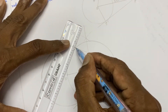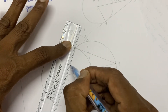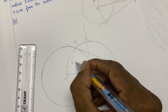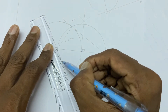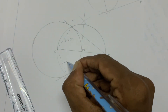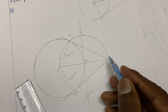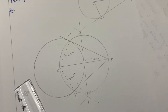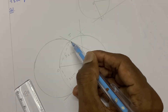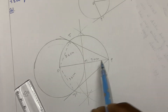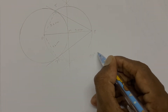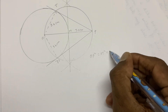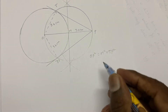Now for the measurement: the radius OT is 3.6 cm, and the distance OP is 7.2 cm. Using the Pythagorean theorem: OP² = OT² + TP².